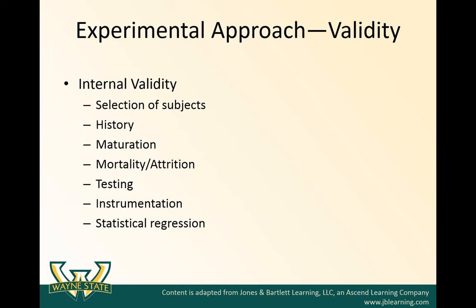One big concern in a randomized controlled trial is the validity of the trial. There are two types of validity we're concerned with. The first is internal validity, and there are some examples of things that can threaten internal validity, which are covered in the book. These include things like selection of subjects, history, maturation effects, mortality attrition, testing, instrumentation, and statistical regression.